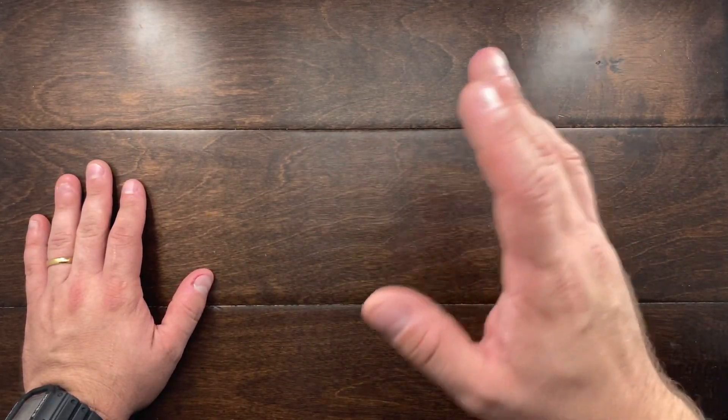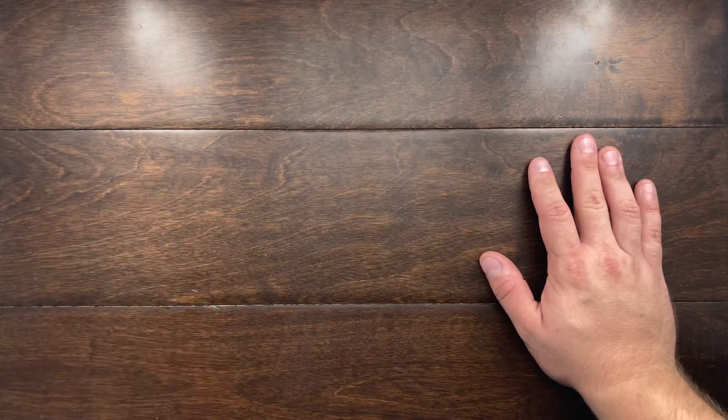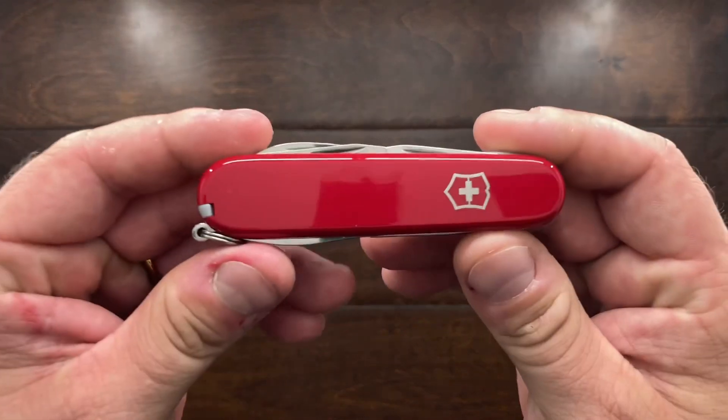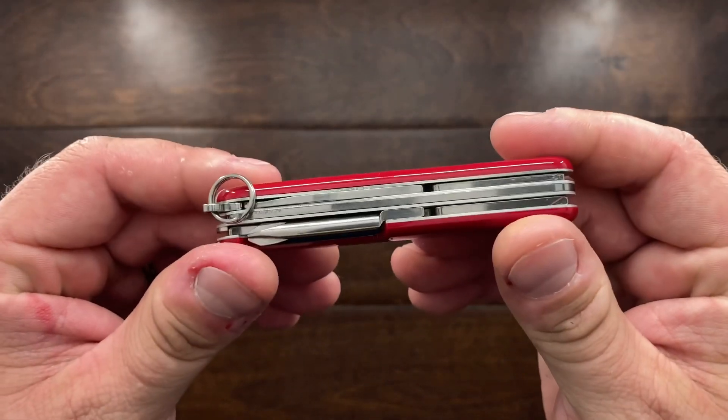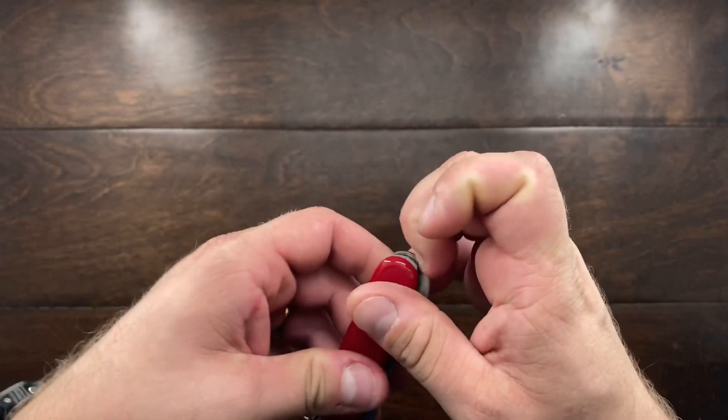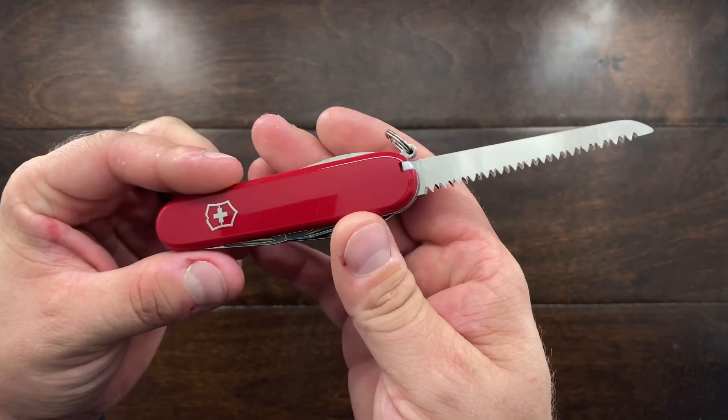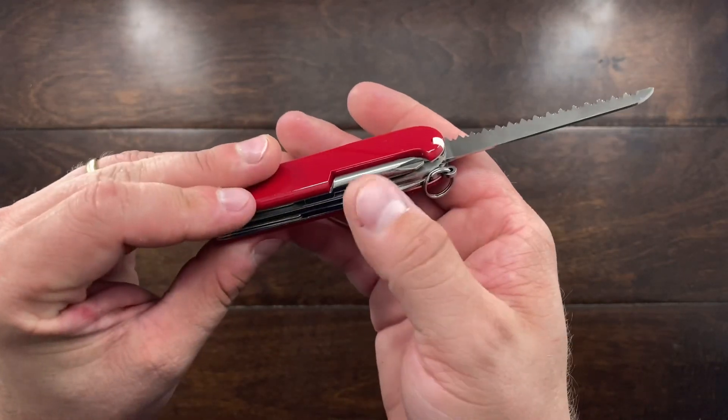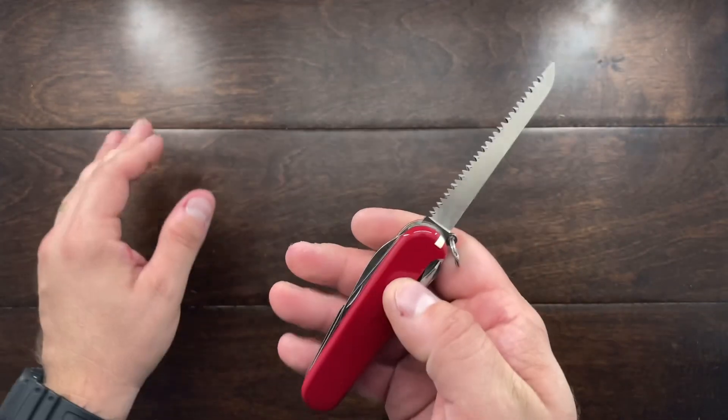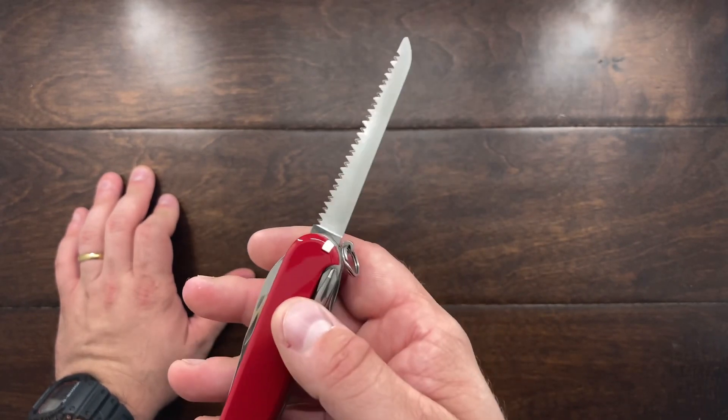But as of late I've really been needing a saw, so I bought myself the Hiker. Now the Hiker is literally a Tinker with a saw blade in the middle, and this is the cousin to the Camper, which has the corkscrew in the back. But this is really what I've been needing and I've been using a little saw out of my Swiss Champ.